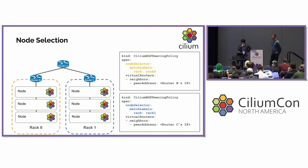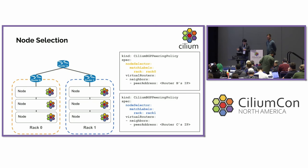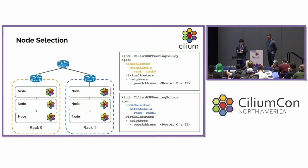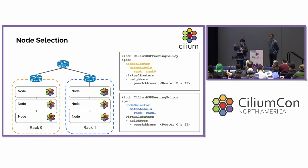Here's how BGP peering works in Cilium. In the Cilium BGP control plane, you can apply BGP policies to nodes by labels using the CiliumBGPPeeringPolicy resource. For example, in this topology we have two racks, each with a top-of-rack router. The nodes under each rack need to peer with their respective router. We can define two BGP peering policies: one that selects nodes on rack 0 and peers with router B, and another that selects nodes on rack 1 and peers with router C.